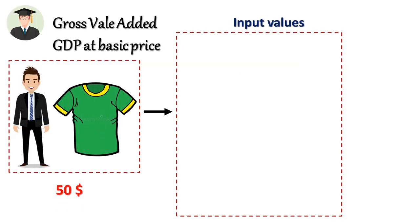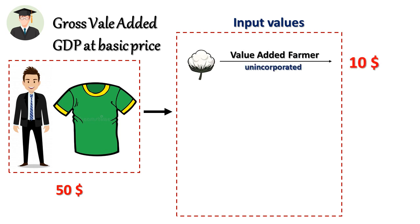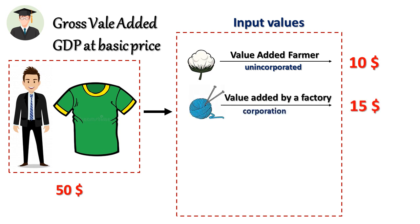The value of one T-shirt is $50. He is producing that T-shirt using production factors. Some of these factors are the final output from other producers. A farmer producing cotton is selling one unit of cotton for $10. After that, using that cotton, another producer produces yarn, and one unit of yarn has a selling price of $15.